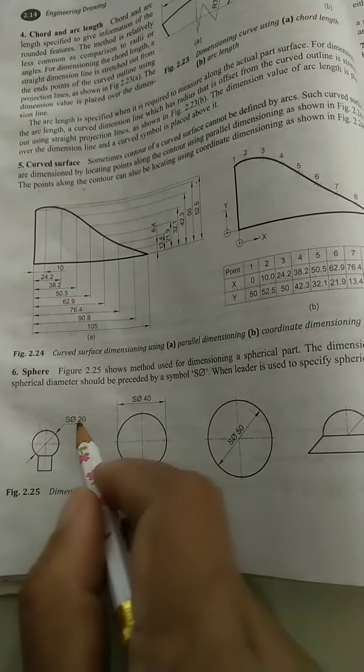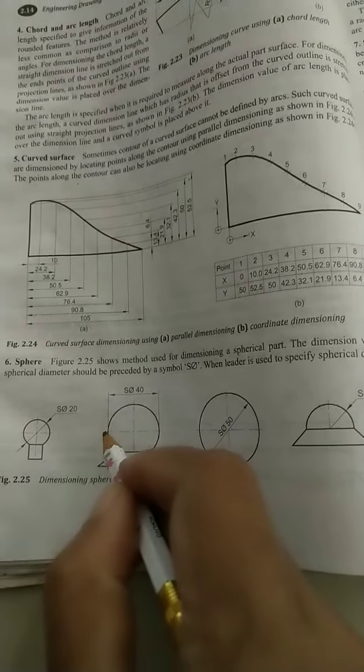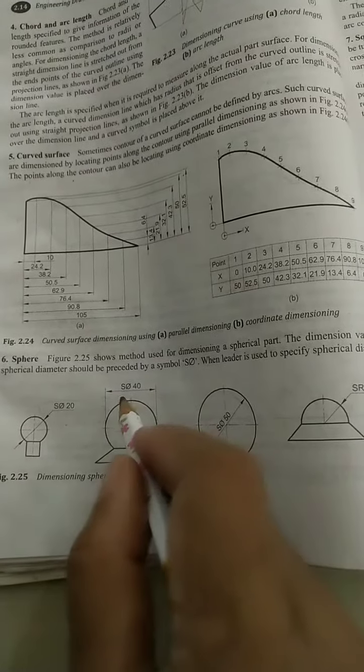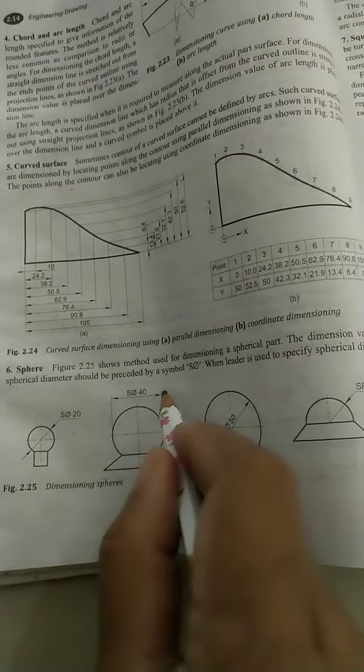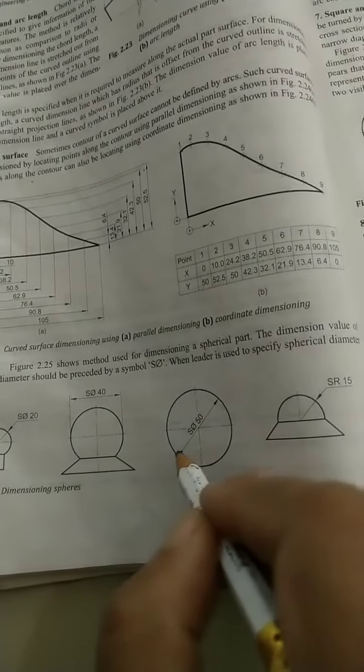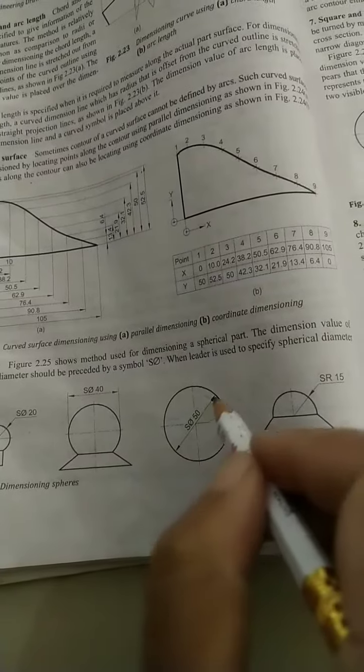Here another method is just do the projector lines and mark the diameter on the dimensional line. Another method of doing the dimension is just do the inclined line, on it write the sphere diameter.